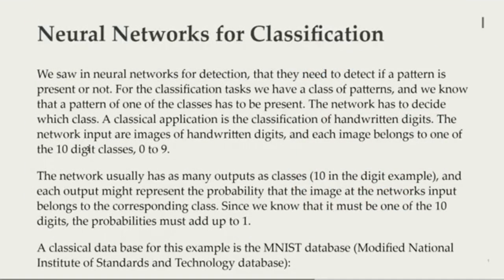We saw in neural networks for detection that they need to detect if a pattern is present or not. For the classification tasks, we have a class of patterns and we know that a pattern of one of the classes has to be present. The network has to decide which class. A classical application is the classification of handwritten digits.